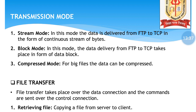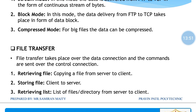In block mode, data delivery from FTP to TCP takes place in the form of blocks of data. In compressed mode, large files can be compressed before transfer. File transfer takes place over the data connection, and commands are sent over the control connection. The operations include retrieving a file (server to client), storing a file (client to server), and retrieving a directory listing (server to client).